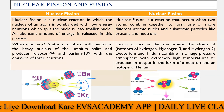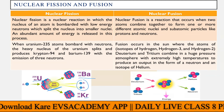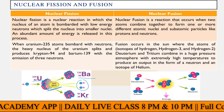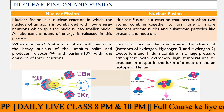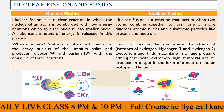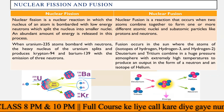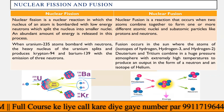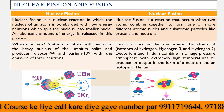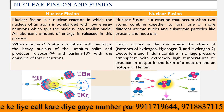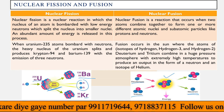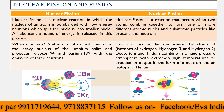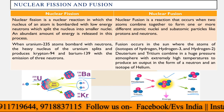200 megaelectron volts of energy is released by one atom of uranium. In the nuclear fusion reaction, two small atoms — deuterium and tritium — combine and create one helium atom. One neutron is also released, and almost 17 megaelectron volts of energy is released.